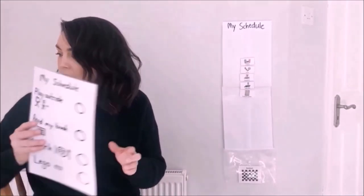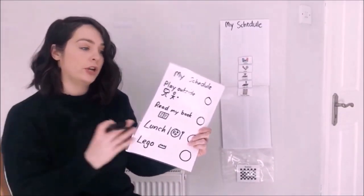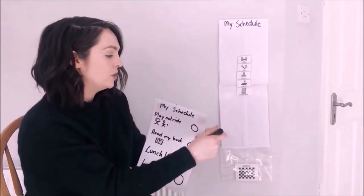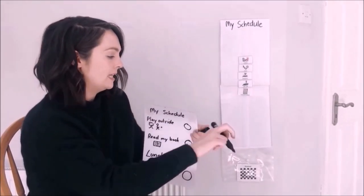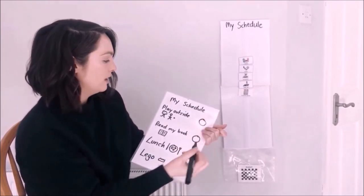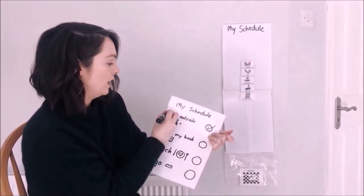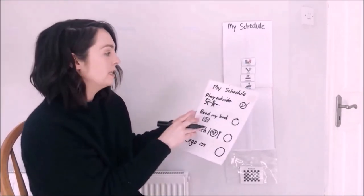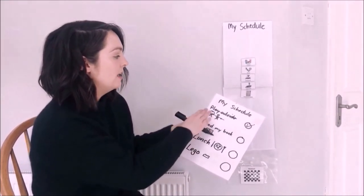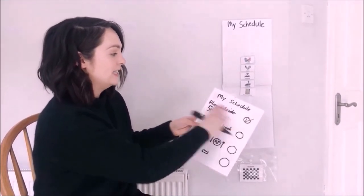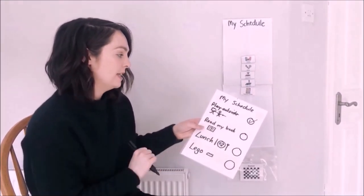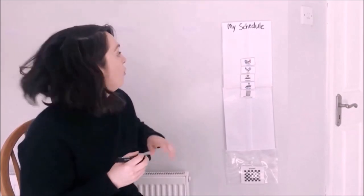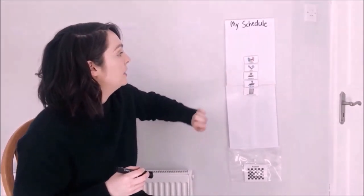If you have a written schedule, you might have tick boxes. You can either tick that it's finished or cross it out, which helps the child see what is finished and what is next when they come back to the schedule.